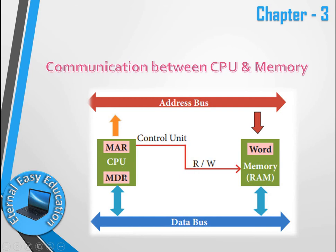The ALU does the processing inside the CPU. Inside the CPU there are two key registers: MAR (Memory Address Register) and MDR (Memory Data Register). The control unit manages the flow — how to take data from memory and how to send content from the CPU to memory. There are two buses: the address bus and the data bus, used for communication.